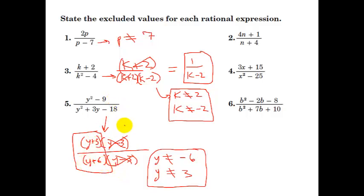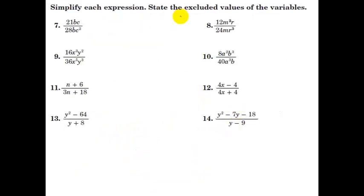So this is a bit of simplifying and finding excluded values. Simplify each expression, state the excluded values. So again, simplifying. Now, if it's just a monomial over a monomial, we're going right back to exponent rules. So 21 over 28 reduces to what? That's going to be, they both have a 7 in them, so we can reduce that to 3 fourths. The b divided by b cancels out, and the c over c squared leaves a c by itself in the denominator. So just 3 over 4c. But it's that same idea where you factor and cancel whatever is in common.